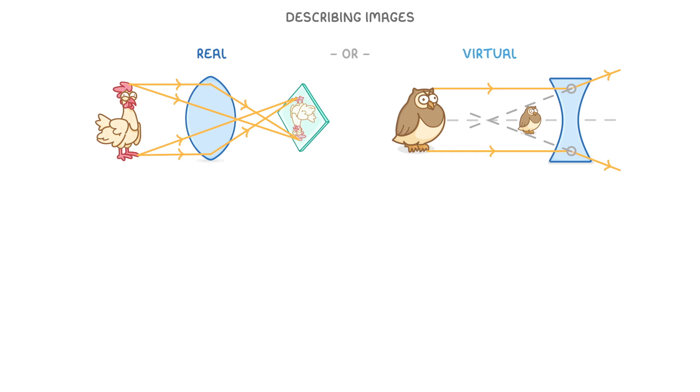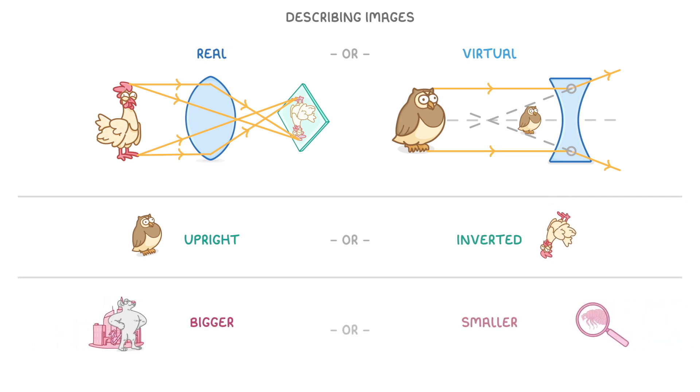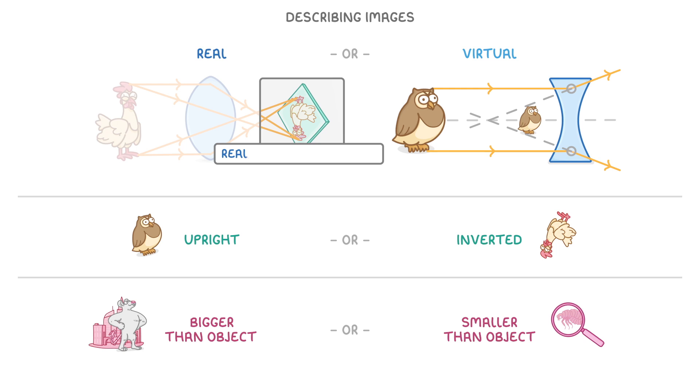Finally, when it comes to describing images in exams, as well as mentioning whether they are real or virtual, you also want to comment on whether the image is upright or inverted, and whether it's bigger or smaller than the object. So in our example on the left, the image would be real, inverted, and smaller than the object. Whereas in our example on the right, the image would be virtual, upright, and smaller.